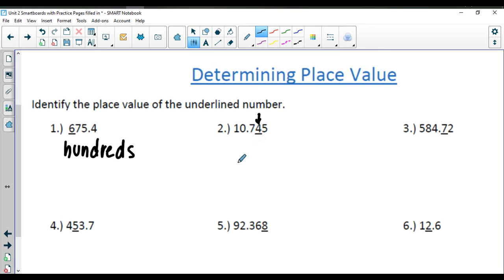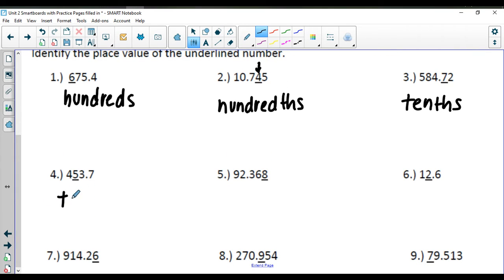In number 2, the 4 that's here is located in the 100ths. Because it's to the right of the decimal point and two spots over. The 7 that's here is in the 10ths place. The 5 that's here in number 4 is in the 10ths place. This 8 is going to be in the 1000ths.